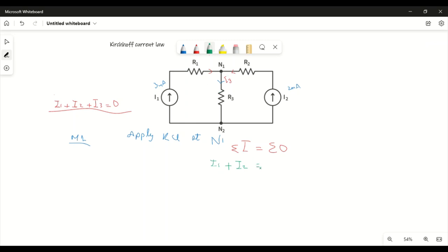Incoming is equal to outgoing. Outgoing is just I3. This equation is one of the methods: incoming is equal to outgoing.